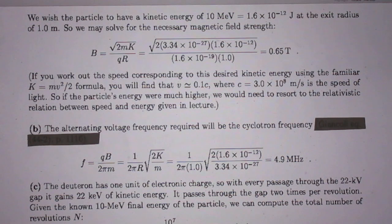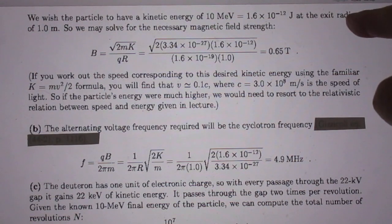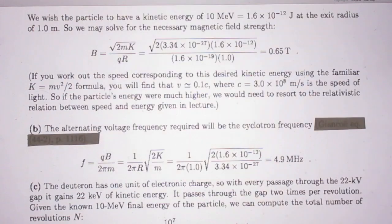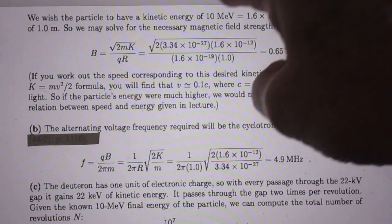The deuterium accelerated in the cyclotron. So read with me. We wish the particle to have a kinetic energy of 10 MeV, that is so many joules, at the exit radius, which is one meter. It goes around radius one meter, and then it exits, and then it's 10 MeV.